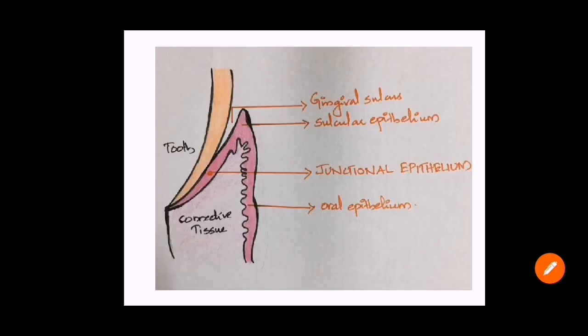I will explain that with the help of a picture. This is your junctional epithelium, and it is facing both the tooth on one side and the connective tissue on the other side — which is exactly what we said: it faces both the tooth and the connective tissue.